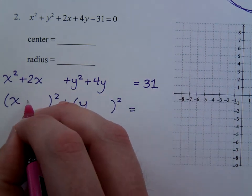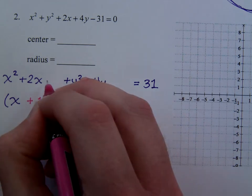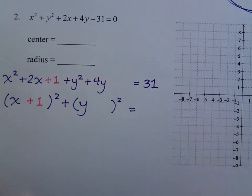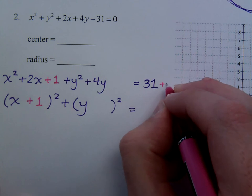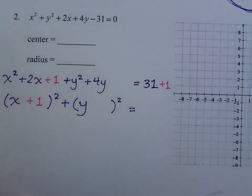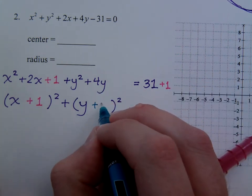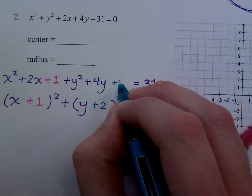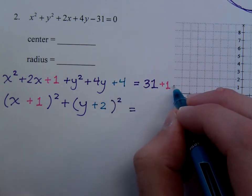Half of 2 is 1. 1 squared is 1. So I need to add 1 over here as well. Half of 4 is 2. And 2 squared is 4. So I need to add 4.